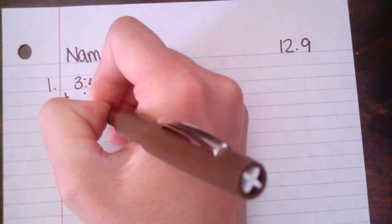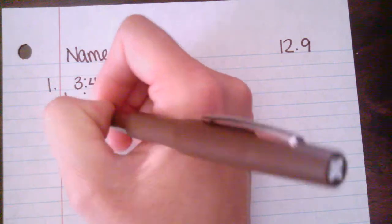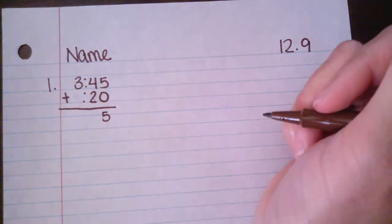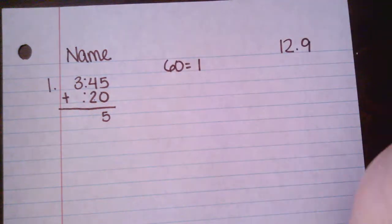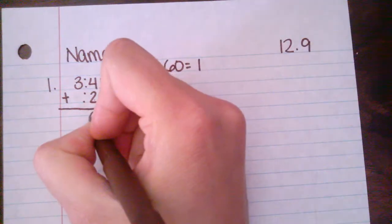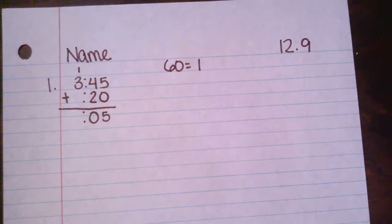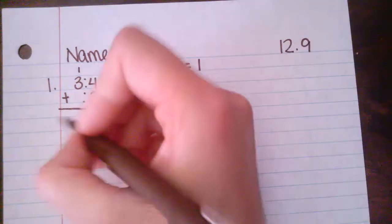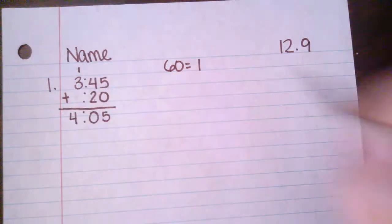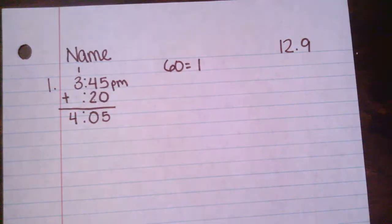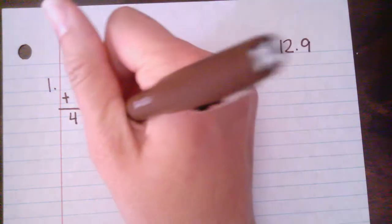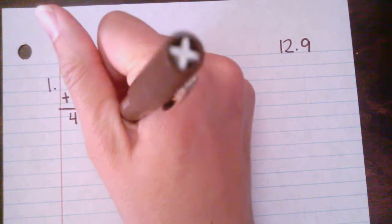Five plus zero equals five. Four plus two equals six, but remember that if you get a 60, that equals one whole hour. So this is going to turn into a zero and we're going to carry over that hour and make it 4:05. And since this was 3:45 p.m., we are still working at p.m., 4:05 p.m.